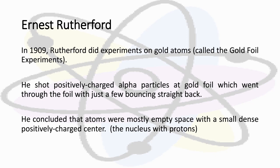Then came along Ernest Rutherford. In 1909, Rutherford did experiments on gold atoms called the gold foil experiments. He shot positively charged alpha particles at gold foil, which went through the foil with just a few bouncing straight back.